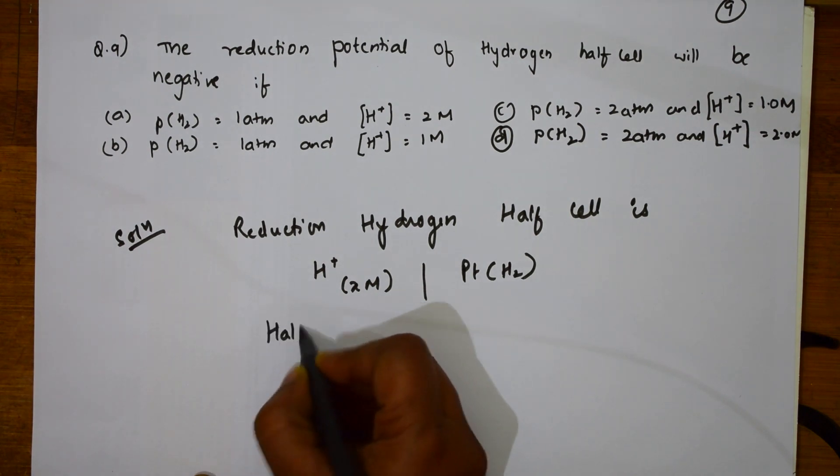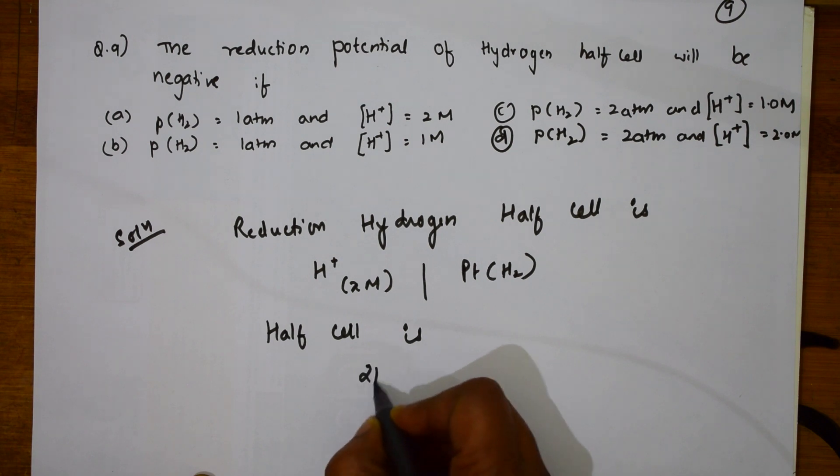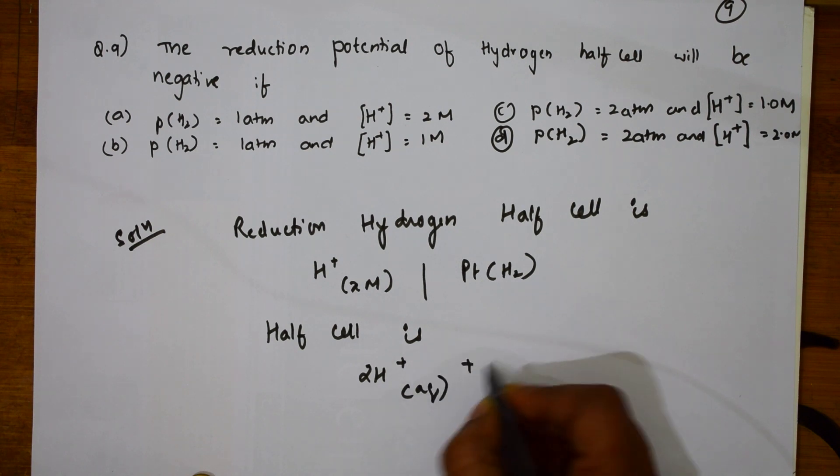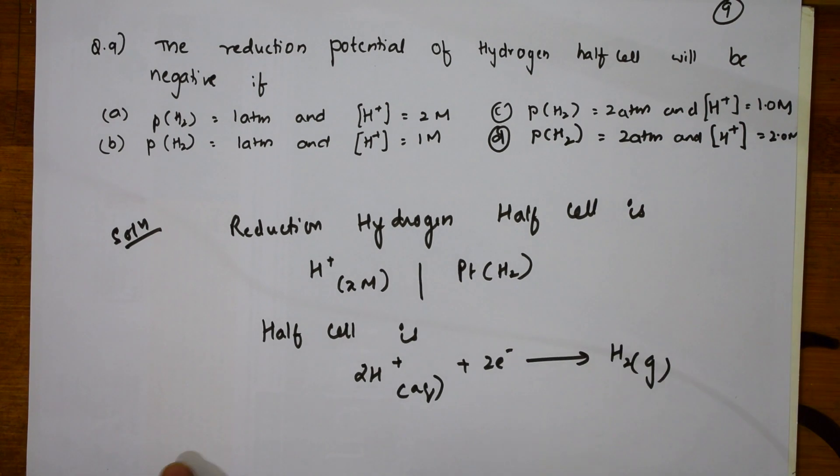Now, half cell reaction if I have to write for hydrogen. Already we have learnt SHE in one of the videos earlier when I taught you your grade 12 CBSE. H+ aqueous plus two electrons gives me hydrogen gas.